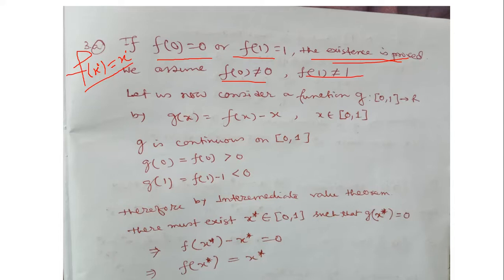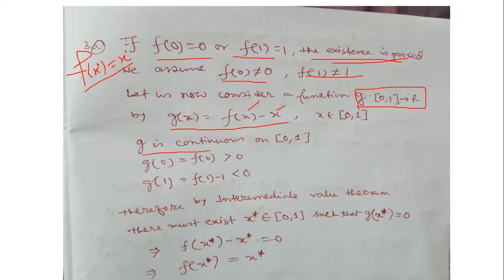Let us consider a new function g(x) = f(x) − x, where x belongs to [0,1]. Since f(x) is continuous and x itself is continuous, f(x) − x is obviously continuous. Therefore g is continuous on [0, 1].